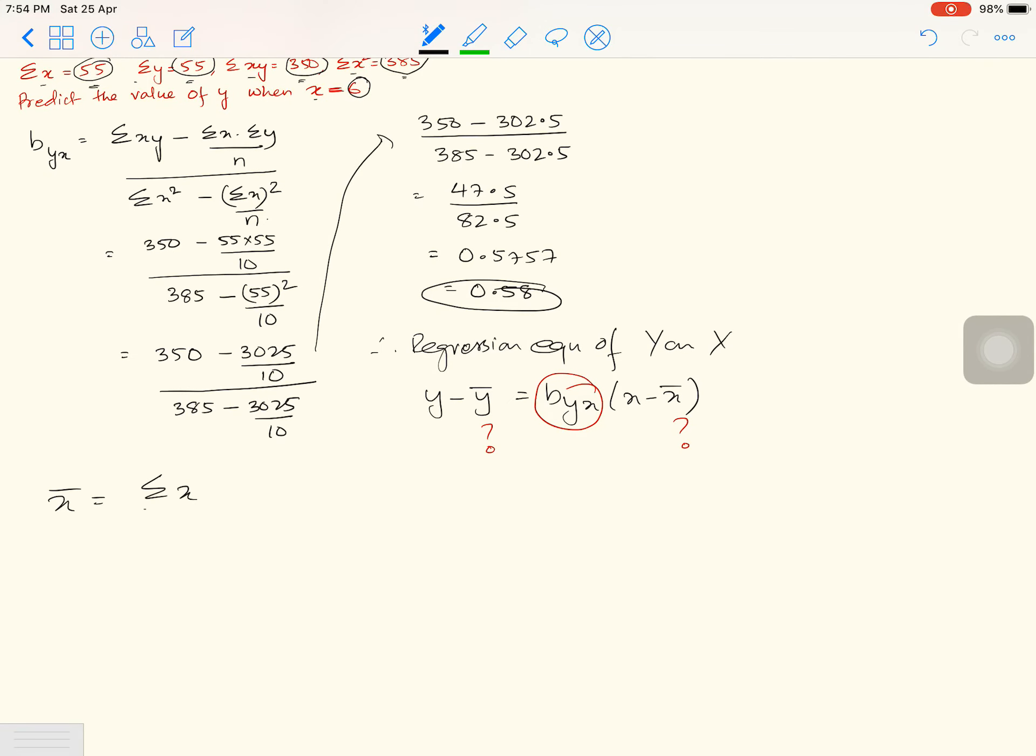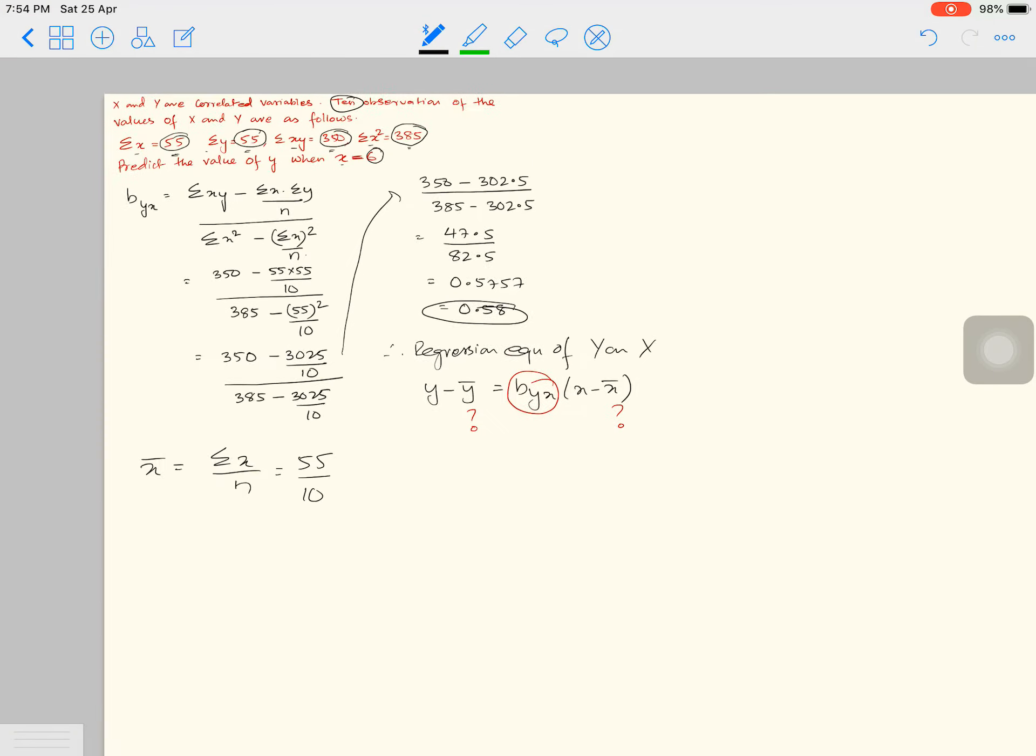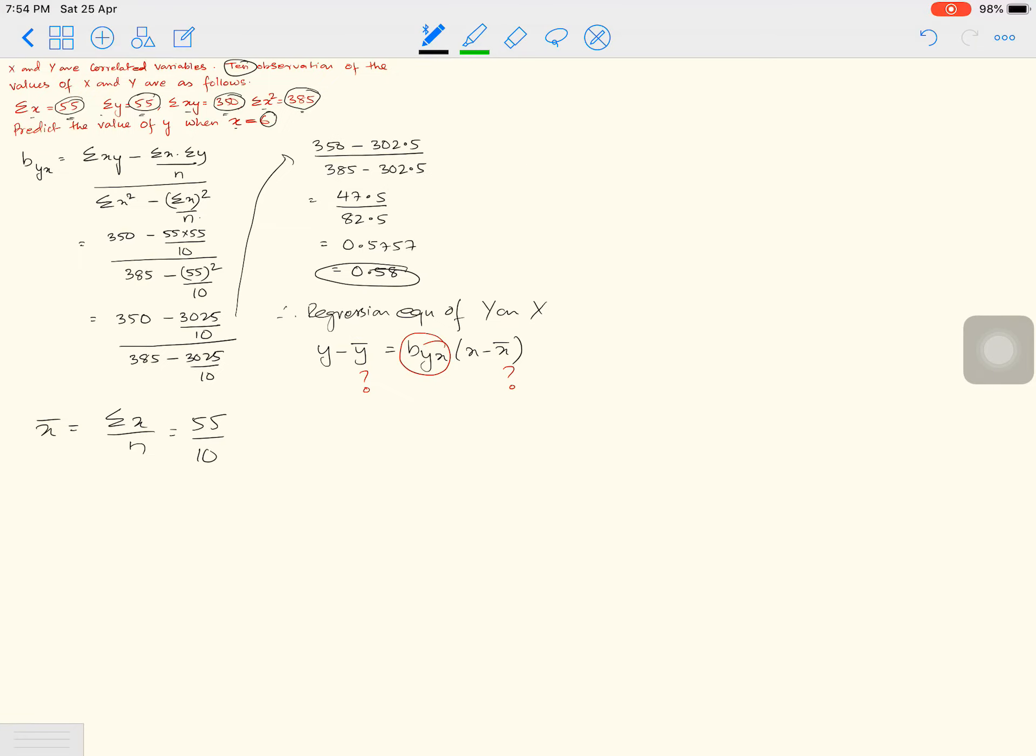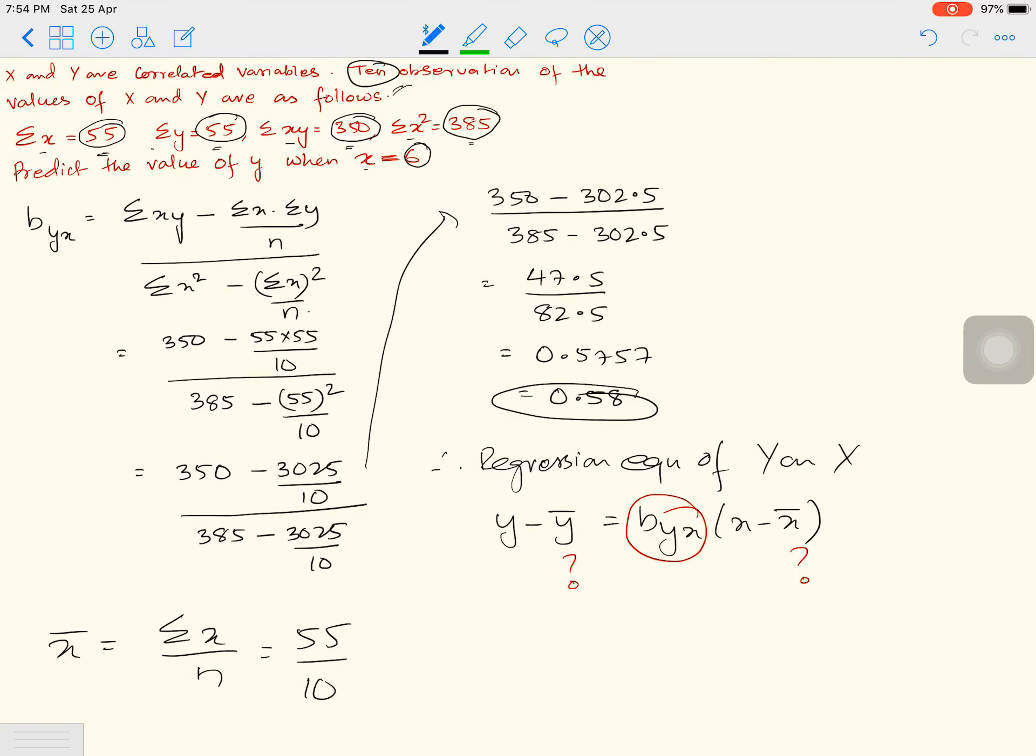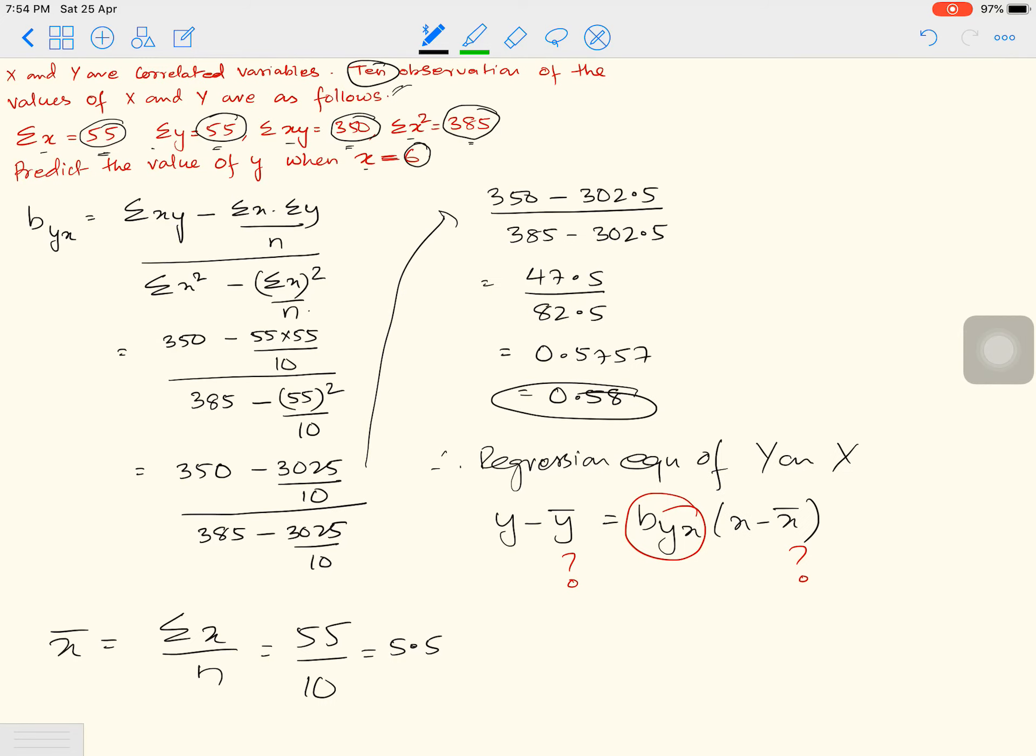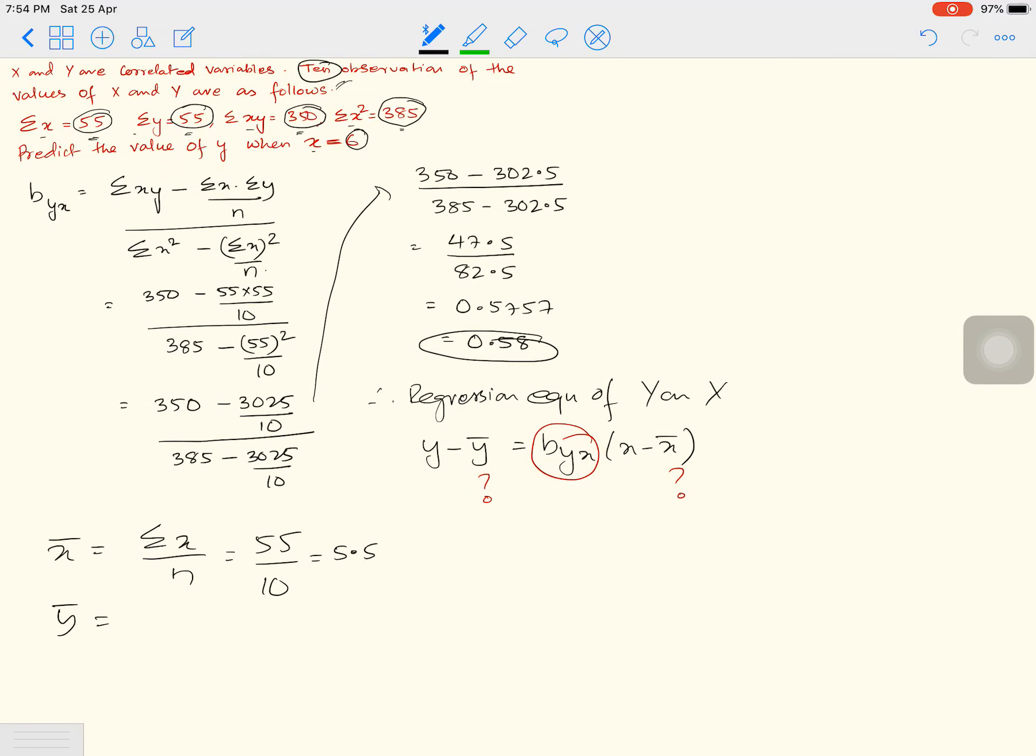How to find X bar? X bar is Sigma X divided by N. So Sigma X is 55 divided by 10, by the way the total number of observations is 10. That would give me 5.5. Similarly, Y bar would be Sigma Y divided by N, that's 55 by 10, which is 5.5. So both are 5.5.